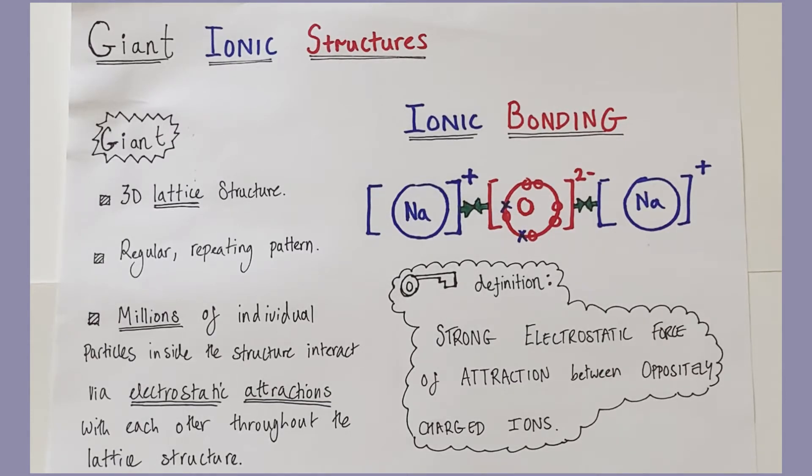Now ions are simply charged atoms or charged molecules, atoms or molecules that have gained an overall charge through either losing or gaining electrons into the outermost shell of the atoms involved. In this particular example, this is sodium oxide, we have sodium ions.